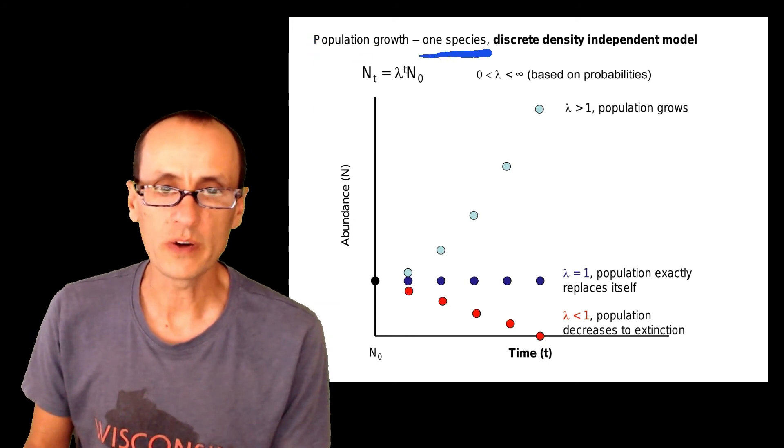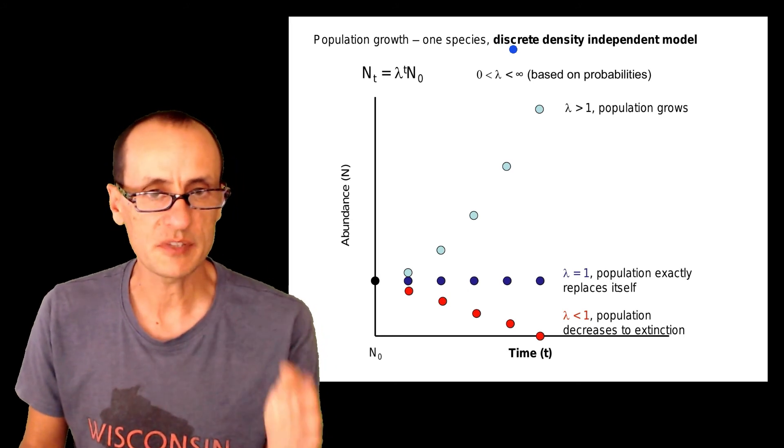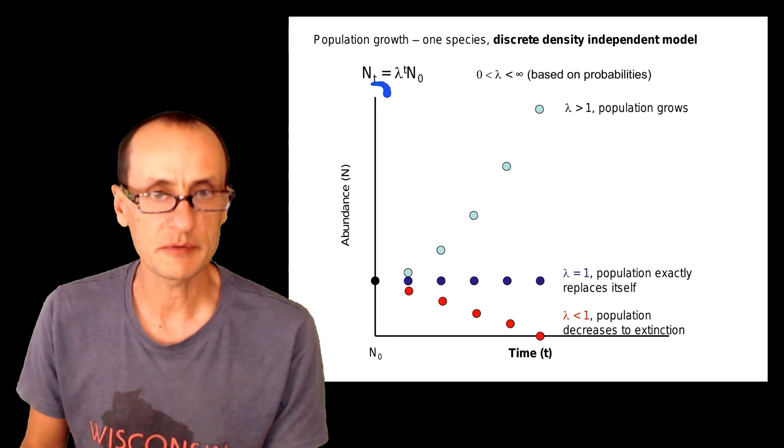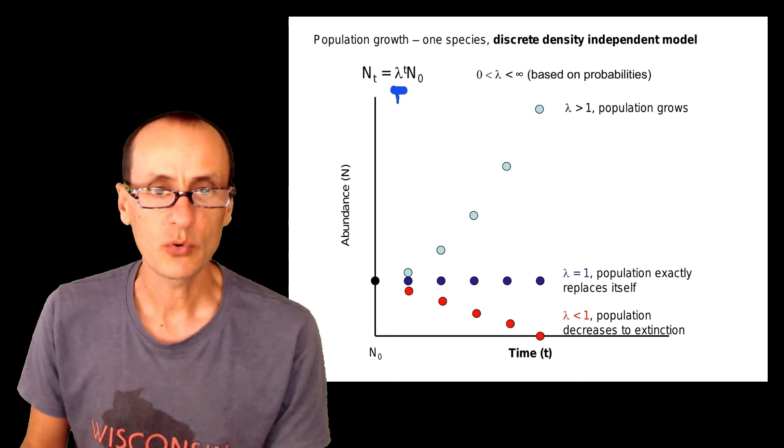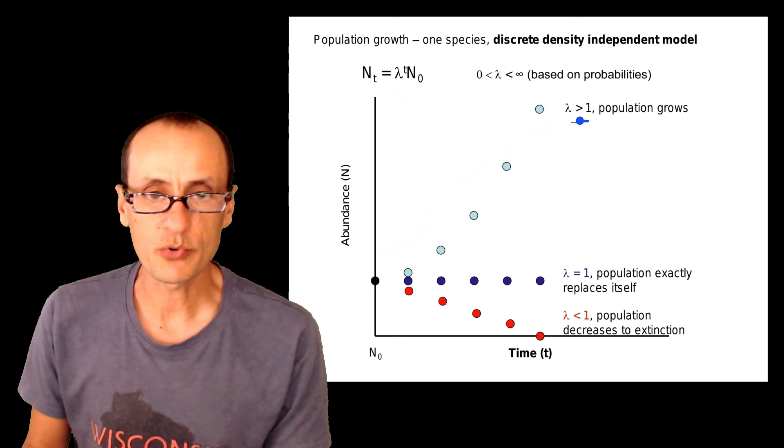For this very simple one-species model that occurs at discrete time steps, time step one, time step two, time step three, with this particular form, with lambda being the finite rate of increase, if lambda is greater than one, this population grows.